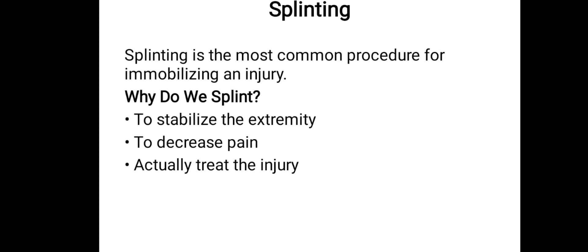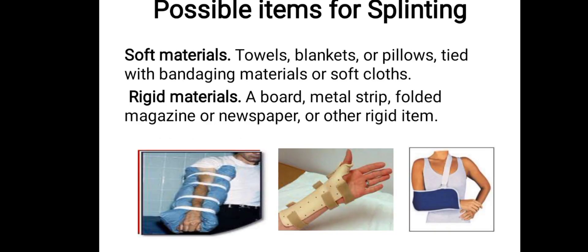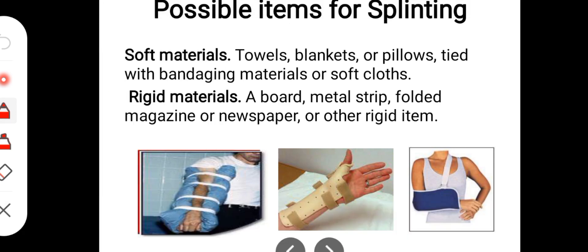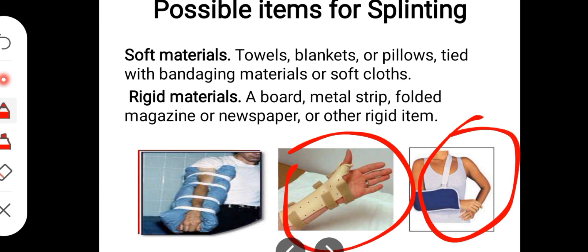Why do we splint? To stabilize the extremities and reduce pain. Splinting materials include two categories: soft material and rigid material. The fracture should be splinted with a supportive device to stabilize and reduce pain.